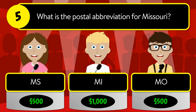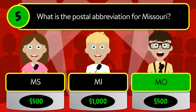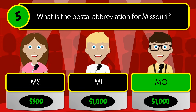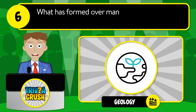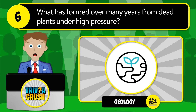Question number five: what is the postal abbreviation for Missouri? Is it MS, MI, or MO? The correct answer is MO. Question number six: what is formed over many years from dead plants under high pressure?